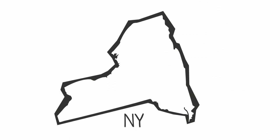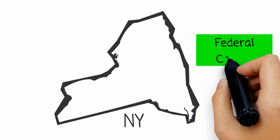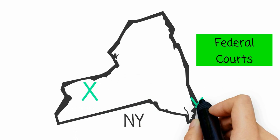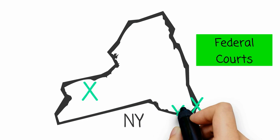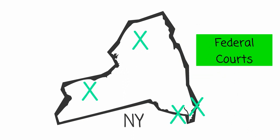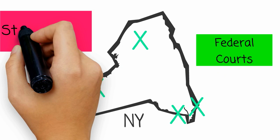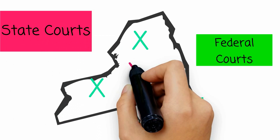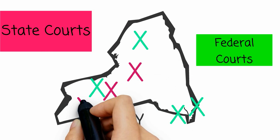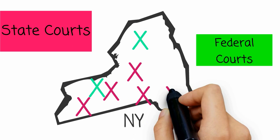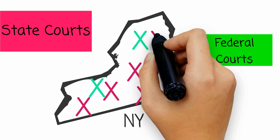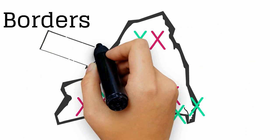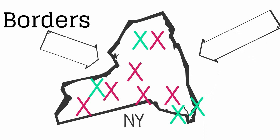Let's take as an example the state of New York. New York is a large state with four United States district courts. Of course, New York also has state courts, and you can find these courts throughout the state. New York also has borders, and borders are relevant to the issue of personal jurisdiction.